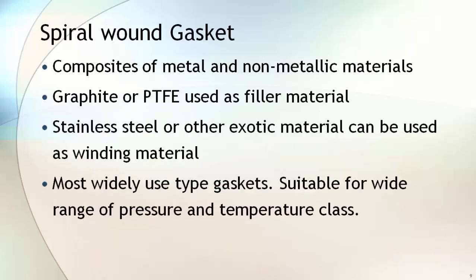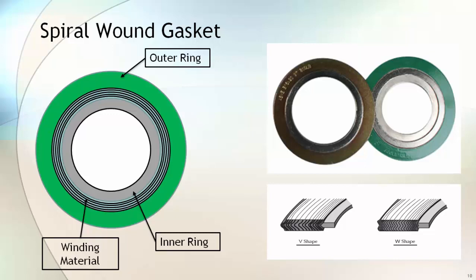The spiral wound gasket is the most widely used composite type. It is suitable for a wide range of pressure and temperature classes. Normally graphite or PTFE is used as filler material, and stainless steel or other exotic material is used as the winding material. Graphite is used when service temperature is high, whereas PTFE is used for normal services. There are three components: inner ring, outer ring, and winding material; however, sometimes the inner ring is not used. The inner ring provides additional support to the winding material. Winding consists of alternating layers of filler material and backing strip, and can be V-type or W-type as shown in the image.